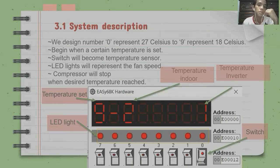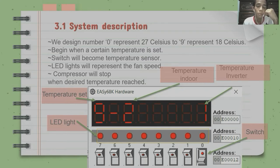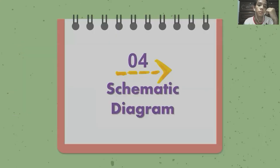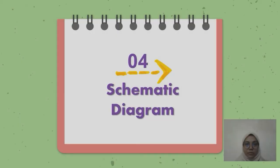For the system description, we design number 0 to represent 27°C and number 9 to represent 18°C. The system begins when a certain temperature is set — the switch will act as a temperature sensor, the LED light will represent the fan speed, and the compressor will stop when the desired temperature is reached.